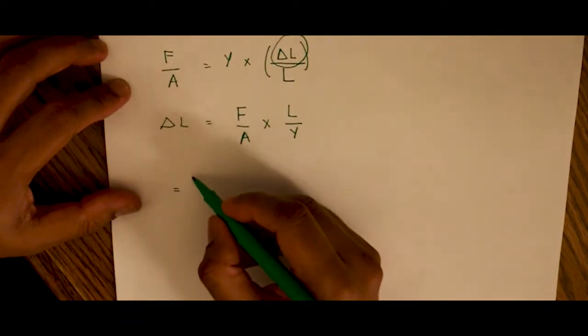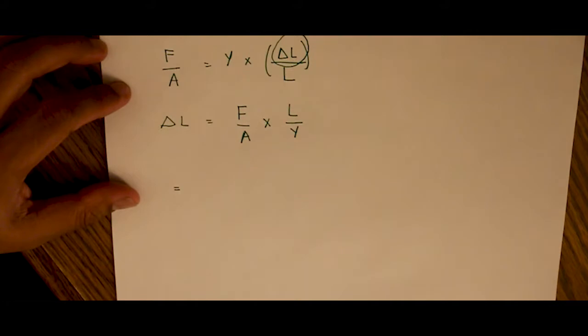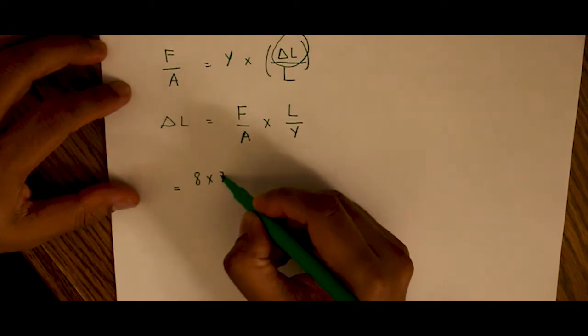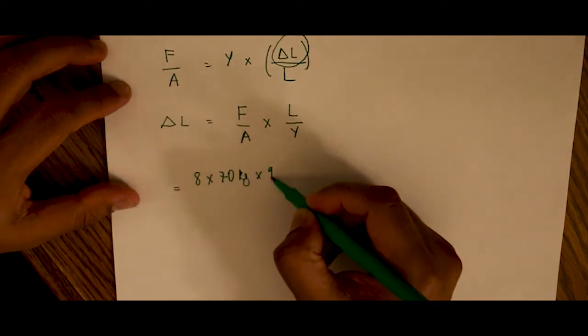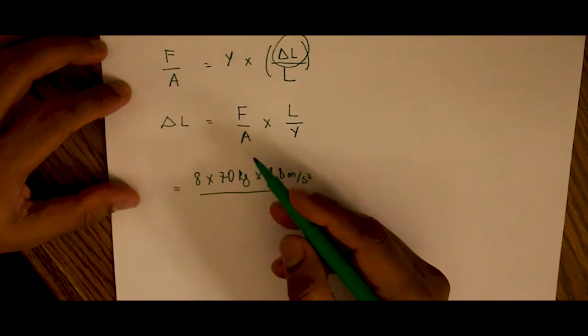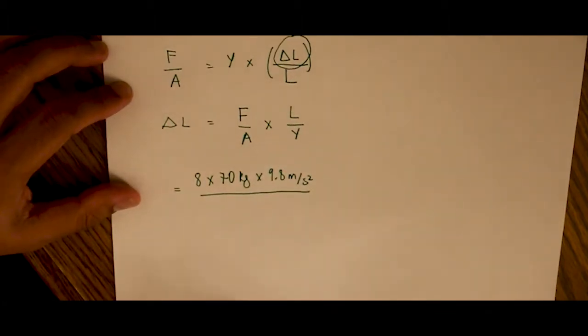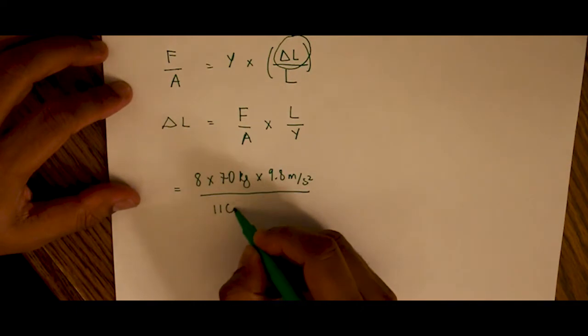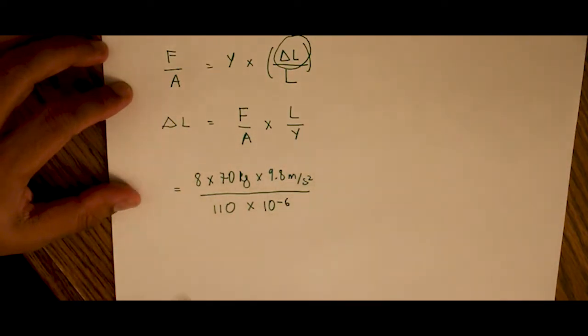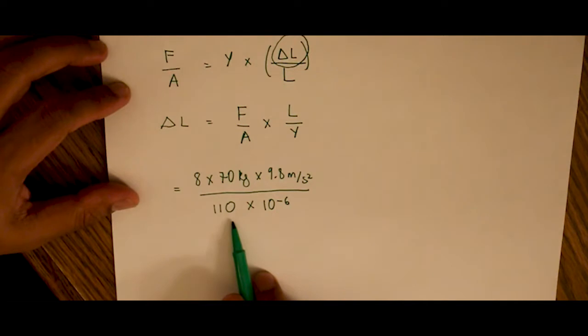So the force is eight times the force. The question asked us to find the stretch for eight times his weight, so eight times 70 kilograms times 9.8 meters per second squared to give us Newtons over the area of the tendon, which is 110 millimeters squared. So that's 110 times 10 to the negative 6 meters. Be careful, so one millimeter is 10 to the negative 3 meters, so one millimeter squared is 10 to the negative 6 meters squared. So keep that in mind, and this is the area.